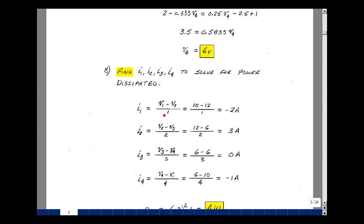We found that I1 was equal to V1 minus V2 over 1, and that was 10, and V2 was equal to 12, divided by 1 is minus 2 amps. We found that I2 was V2 minus V3 over 2. V2 is equal to 12, V3 is equal to 6. Dividing that by 2, we get 3 amps.